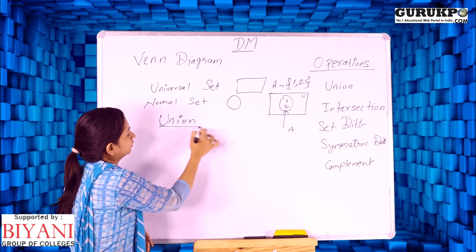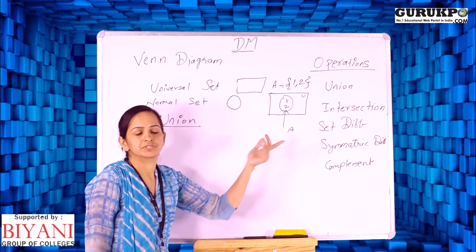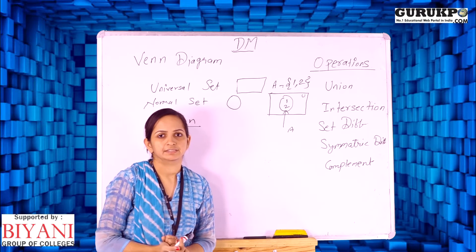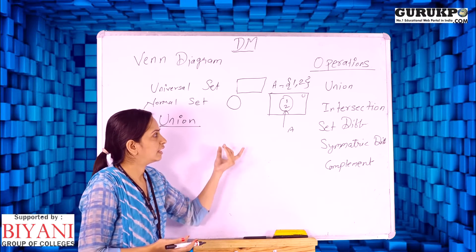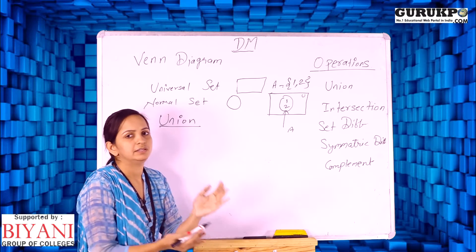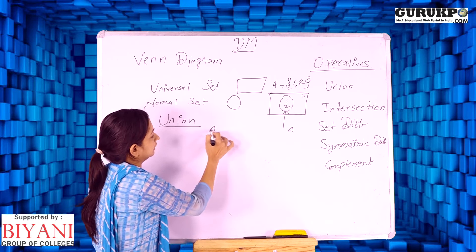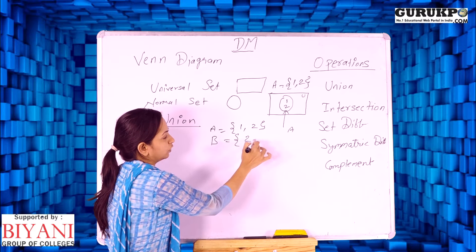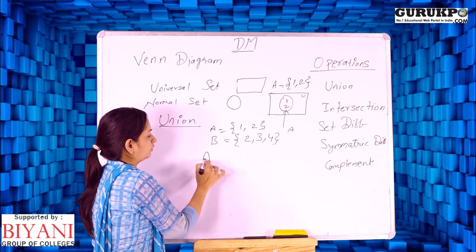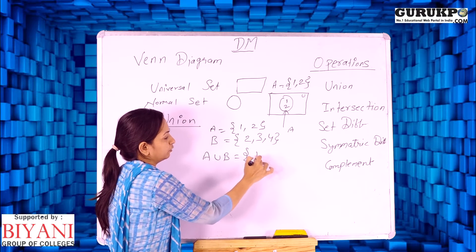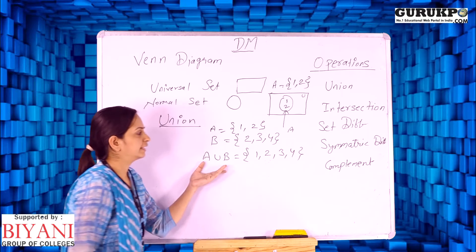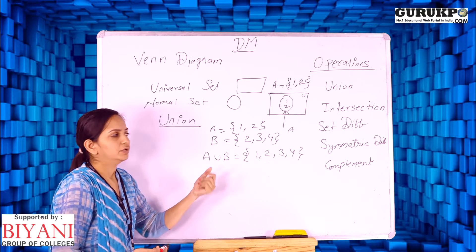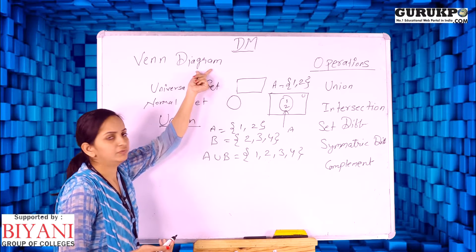I would like to represent the union operation with the help of a Venn diagram. The union operation is the combination of two sets — meaning all the elements of set A and all the elements of set B without repeating the common elements. So if I have set A = {1, 2} and set B = {2, 3, 4}, then the union of A and B is {1, 2, 3, 4}. Today I am going to discuss how to represent this union set with the help of a Venn diagram.